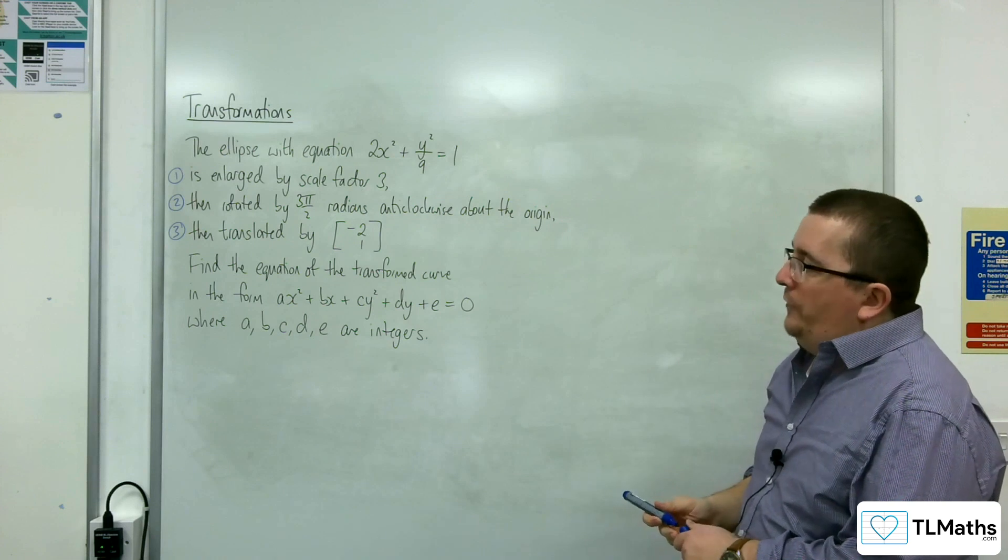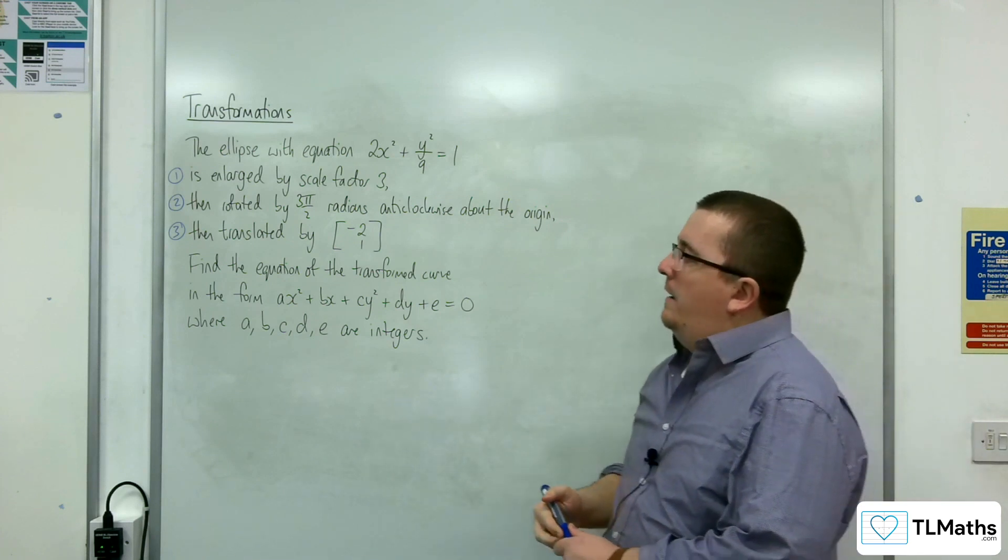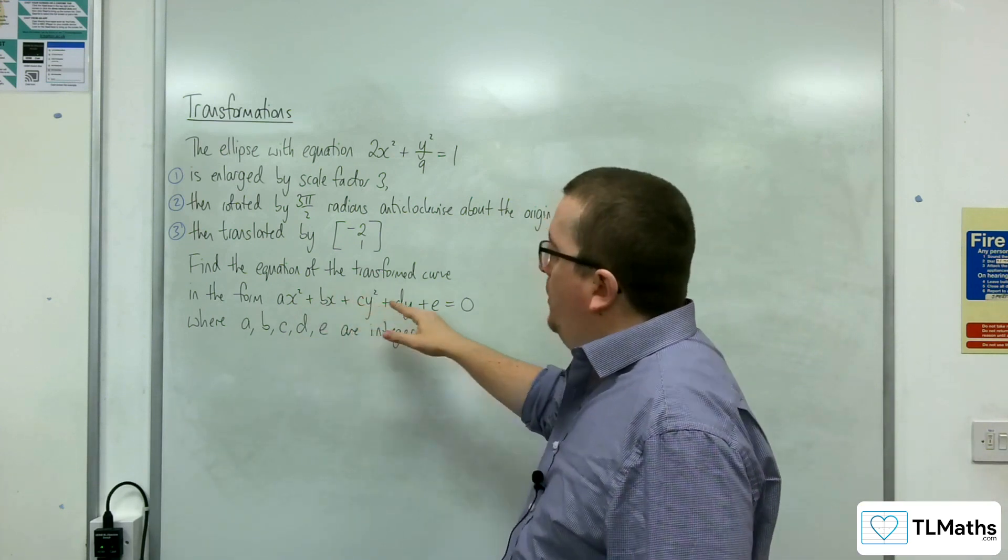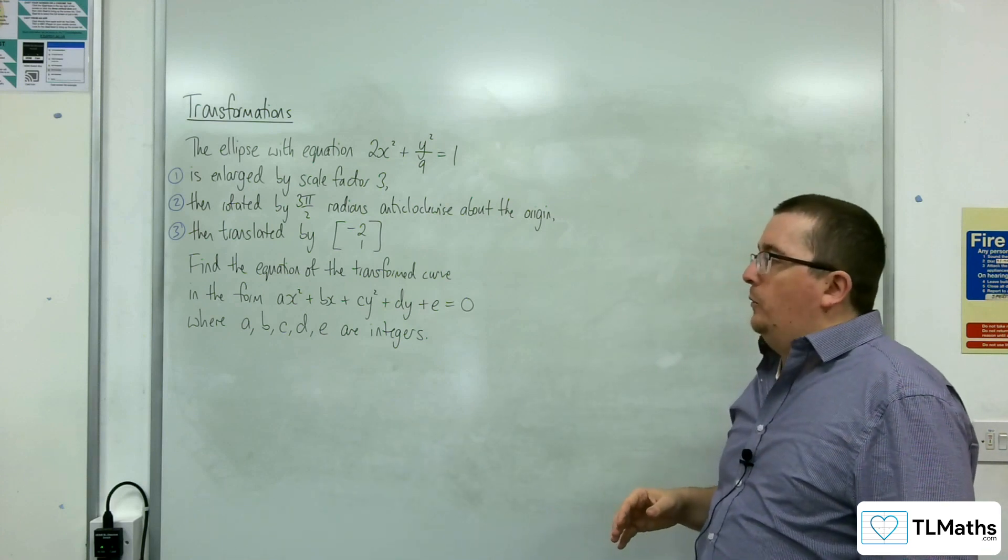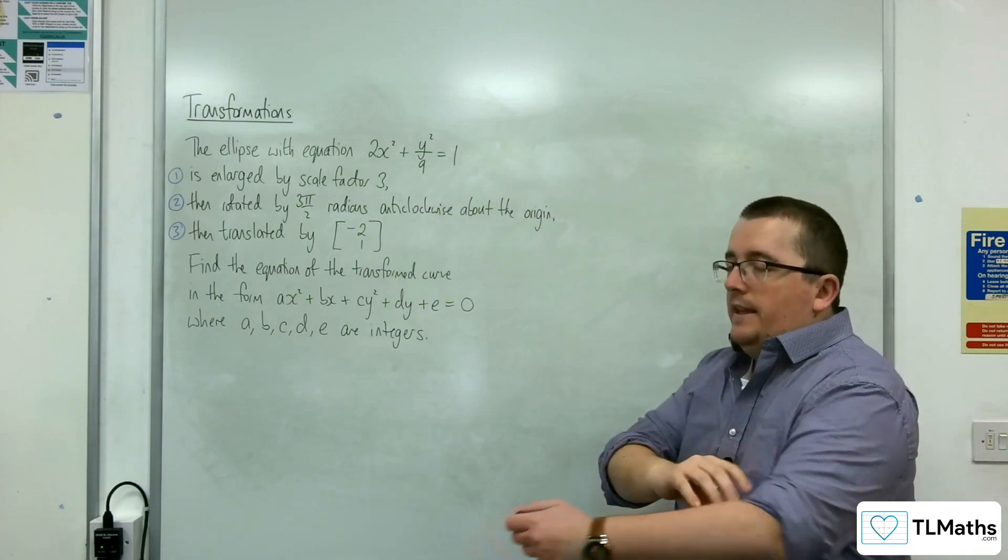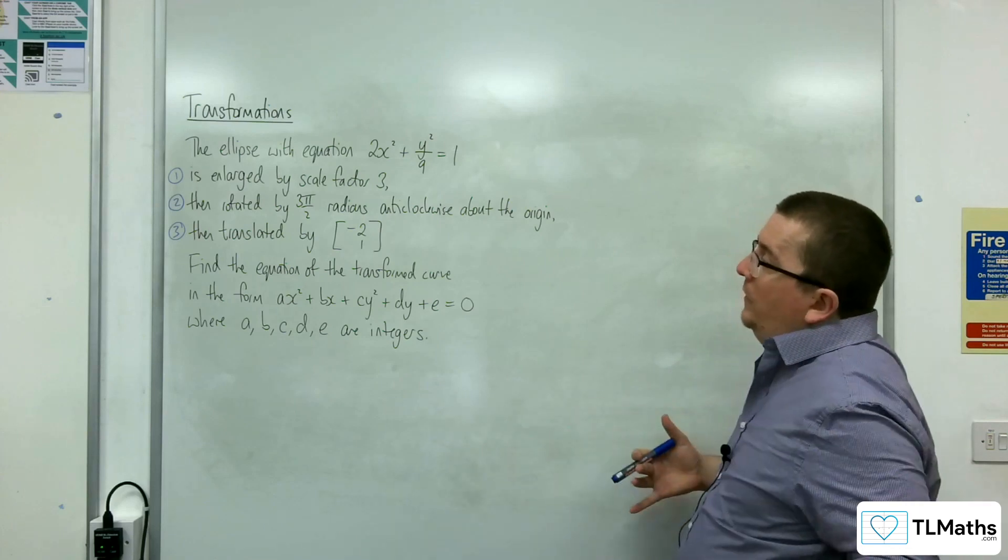Find the equation of the transformed curve in the form ax squared plus bx plus cy squared plus dy plus e equals 0, where a, b, c, d, and e are integers.